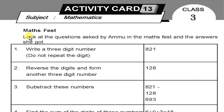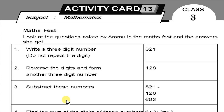Activity card 13 — Math Fest. Look at the questions asked by Ammo in the Math Fest and the answers she got. Ammo said: write a three-digit number, do not repeat the digits. The number is 821. Reverse the digits and form another three-digit number — the reversed number is 128. Now subtract these numbers: 821 minus 128. The answer is 693.